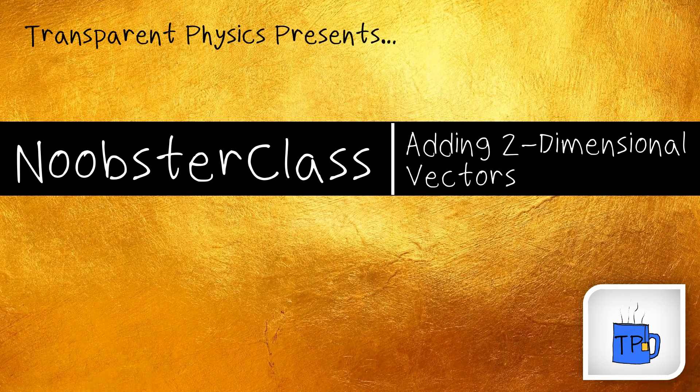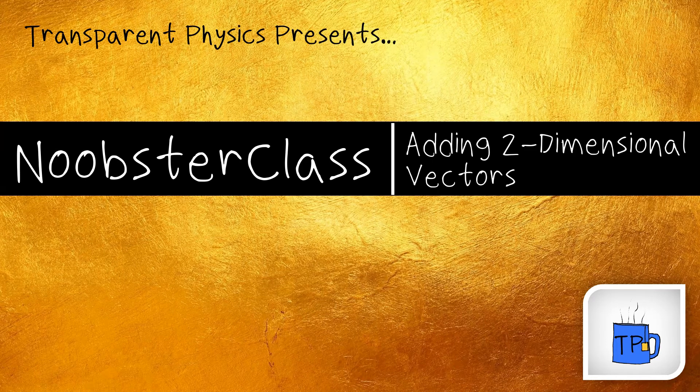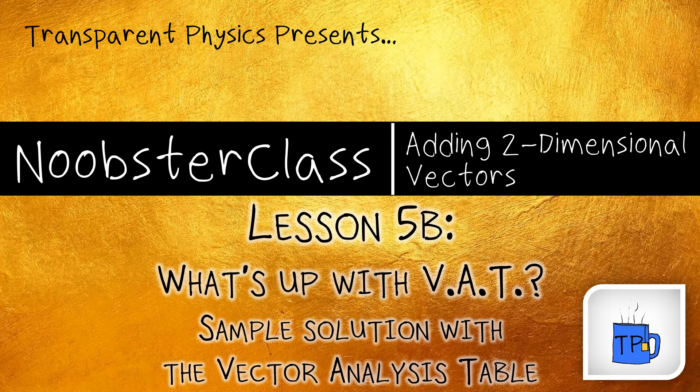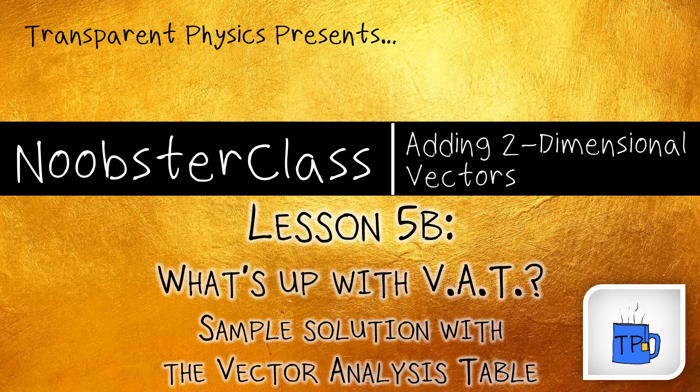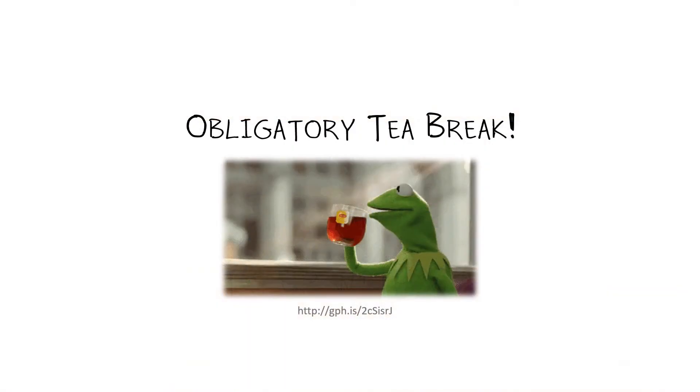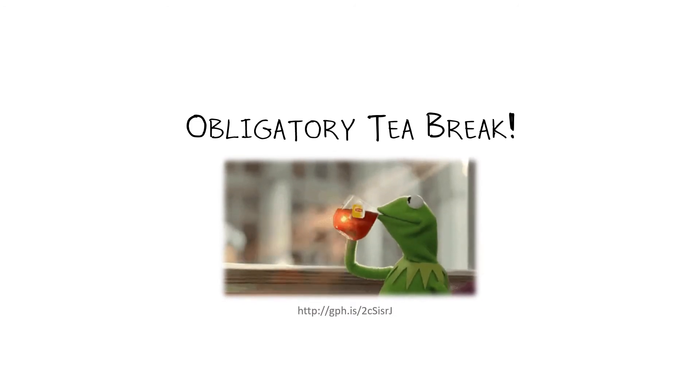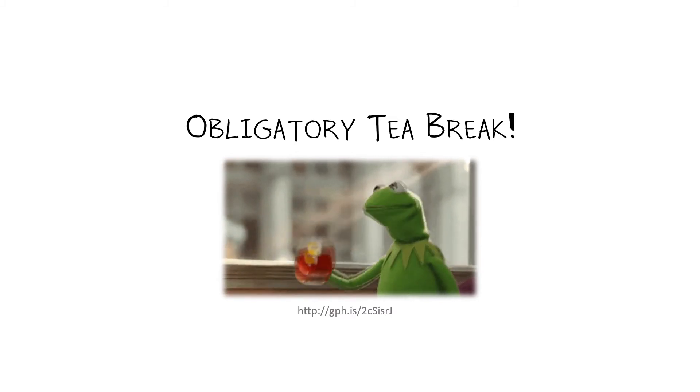Welcome to another lesson from Transparent Physics in our Noobster class series on adding two-dimensional vectors. This is going to be a fun one because we get to show the vector analysis table in action, showing how it takes two non-perpendicular vectors and dices them and slices them, turns them into perpendicular vectors, and voila, we get our answer. Feel free to pause the video, pour yourself a cup of tea, come on back, and we will go through the sample together.